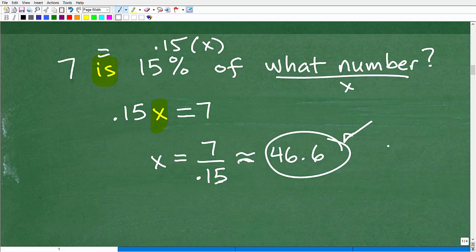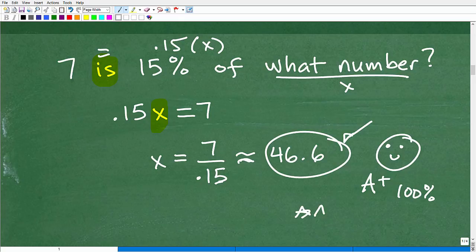So that is the answer. If you got that answer, then excellent. Give yourself a little smiley face and an A+, 100%. Outstanding. If you're able to do this without this method, if you just knew this stuff right from the get-go, you had absolute confidence in your answer, then give yourself a few extra stars. You are awesome. You are a percent master. Perfect. You got to know how to work with percent.